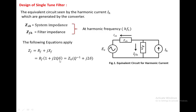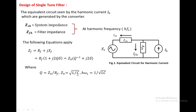Q is the Q factor. Delta is the deviation in the measurement of resonance frequency of the single tuned filter. Q equals Z0 divided by RF, where Z0 equals the square root of L over C. L is the inductance in the filter and C is the capacitance in the filter.